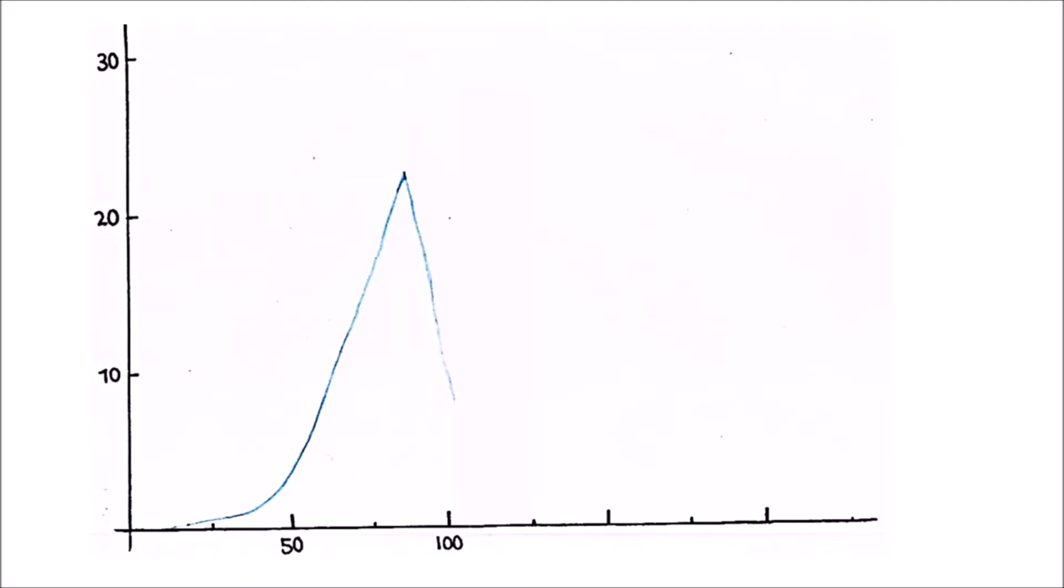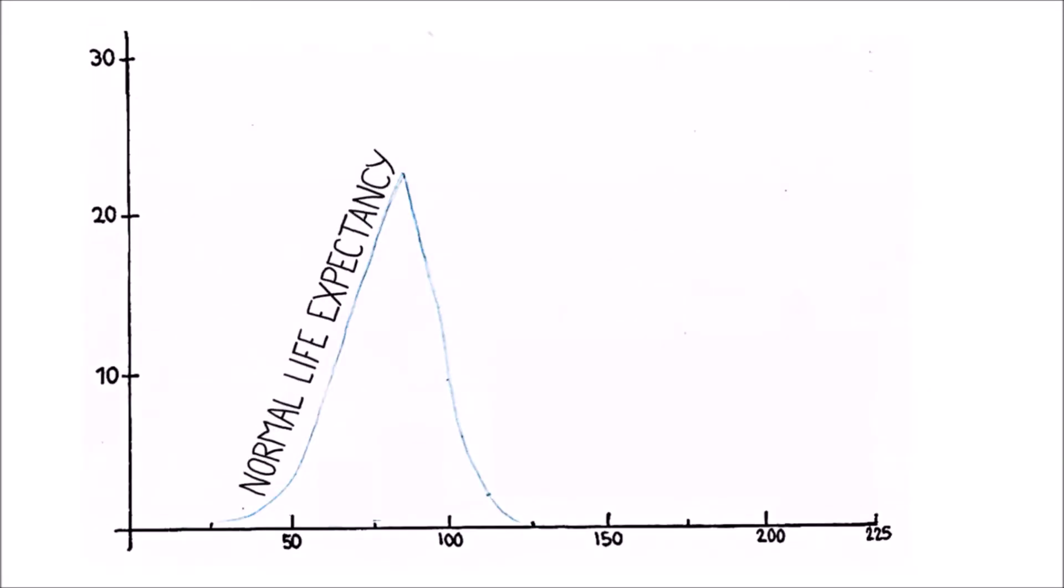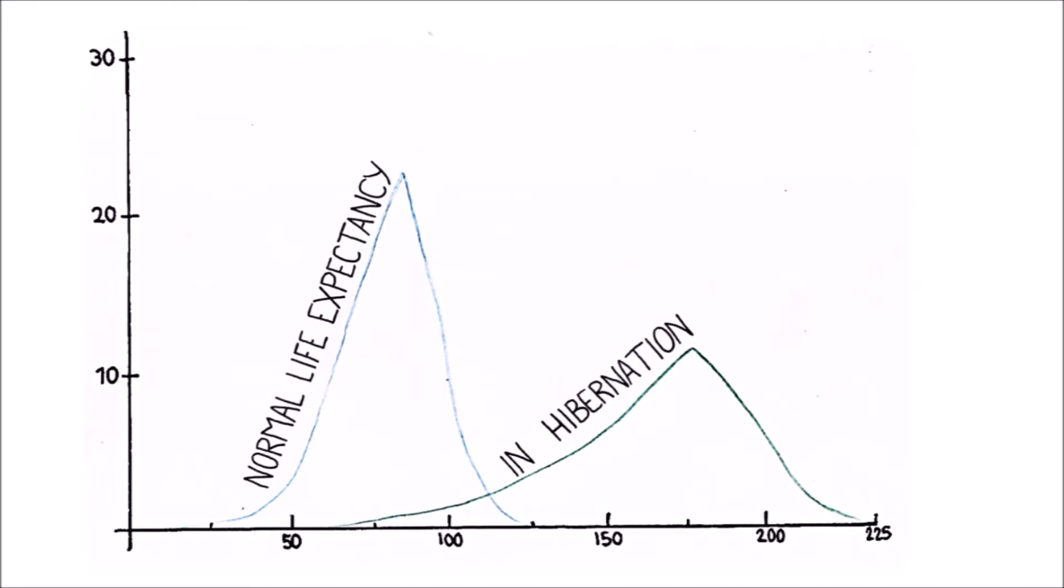Furthermore, torpor appears to slow down aging. It is estimated that if humans were to hibernate each winter, the average lifespan would increase to 175 years. More time is gained this way than is lost hibernating.